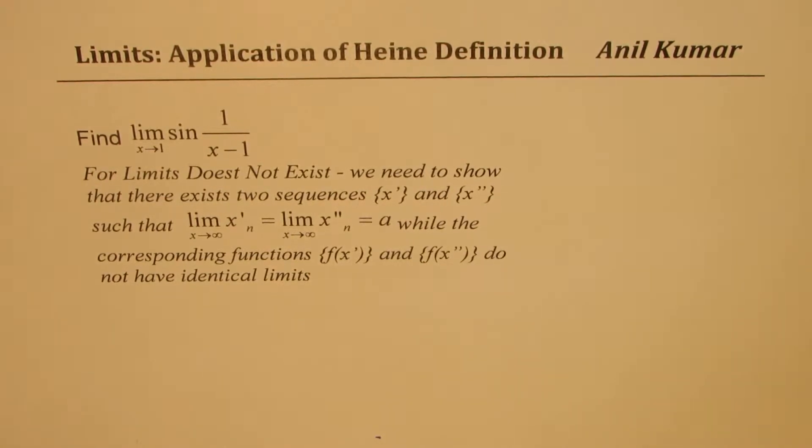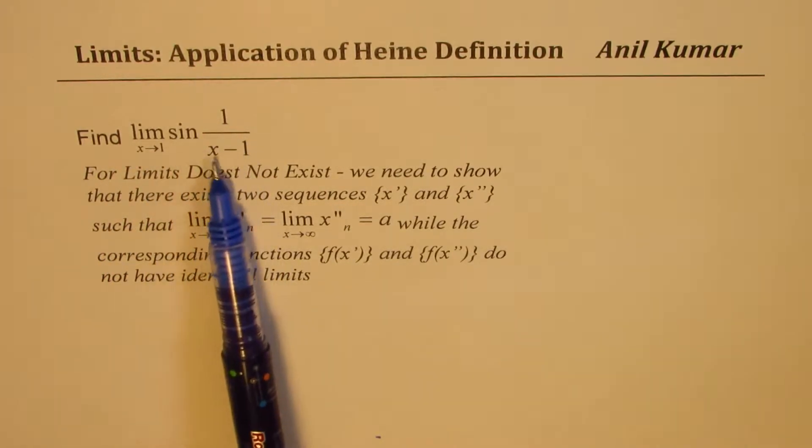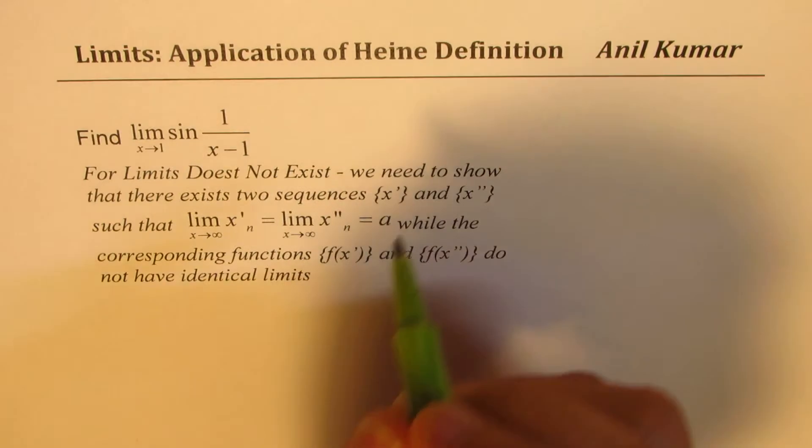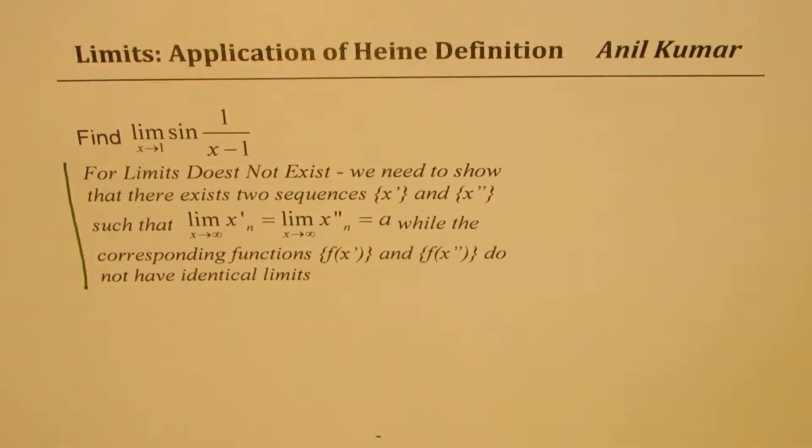The question here is to find the limit when x approaches 1 for sine of 1 over x minus 1. Now we are going to use the definition which Heine wrote to find such limits. In fact, we'll prove that the limit does not exist for this particular function. So let's read through these lines.